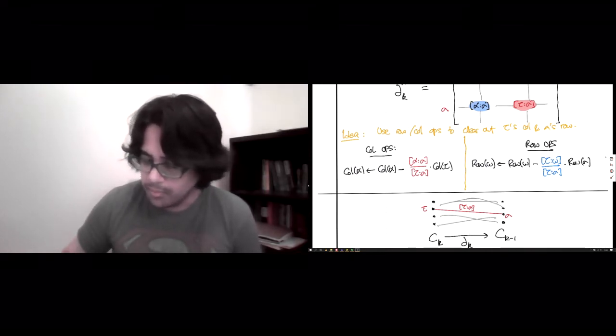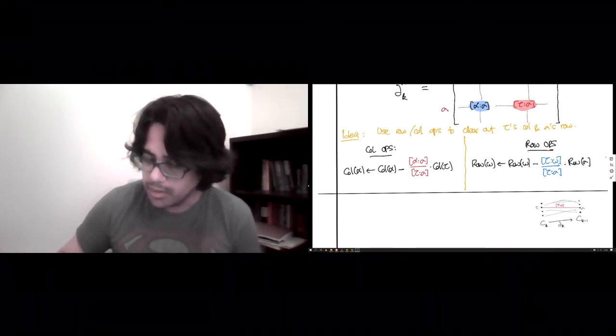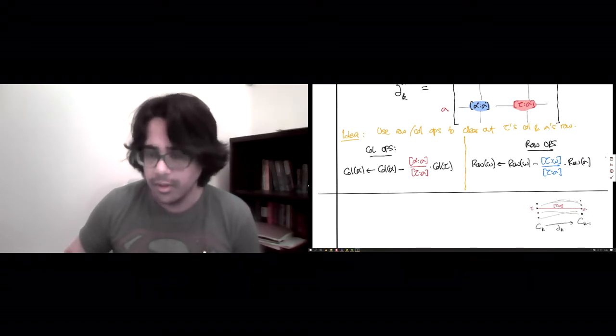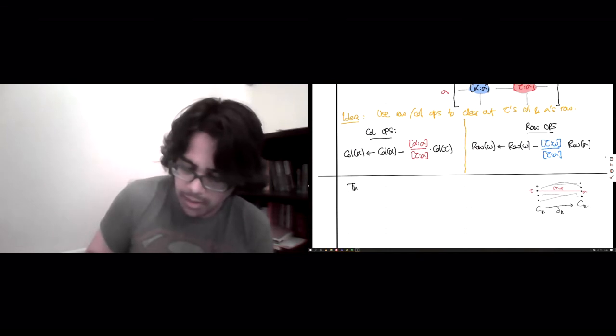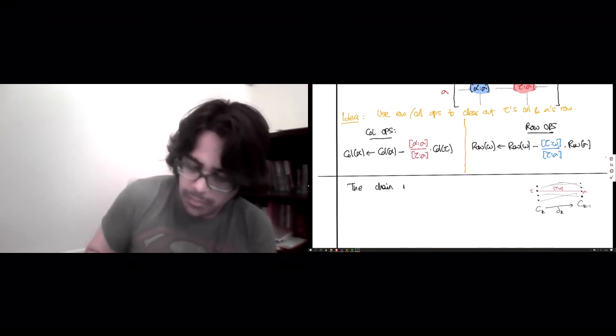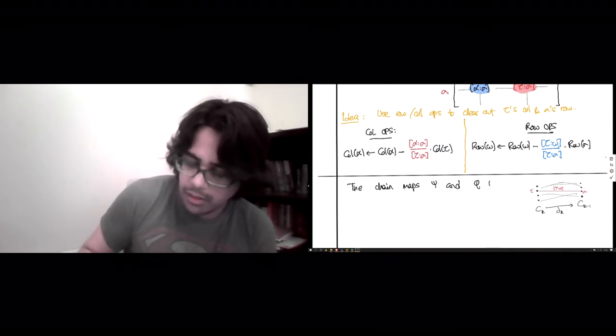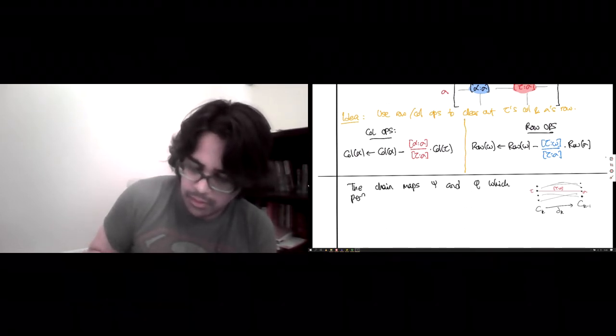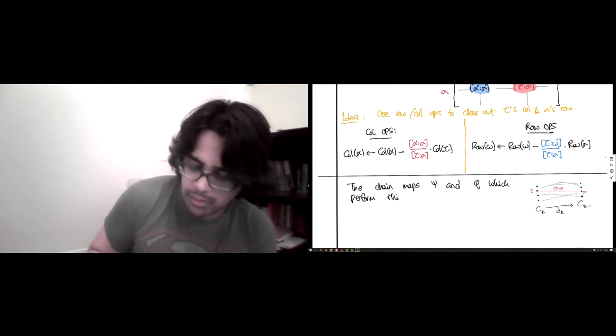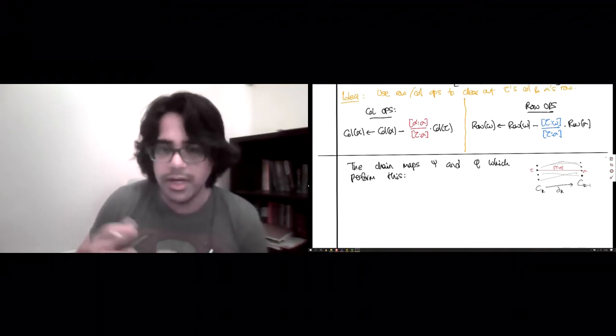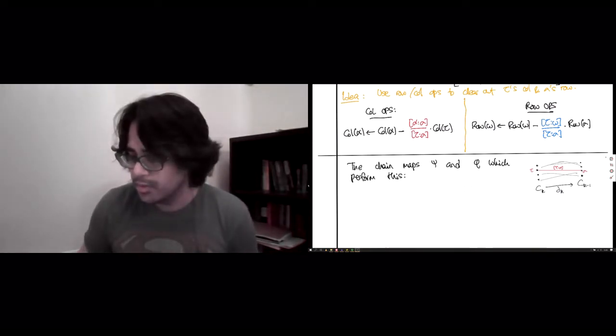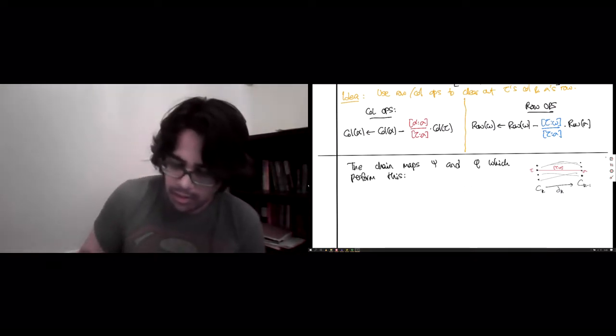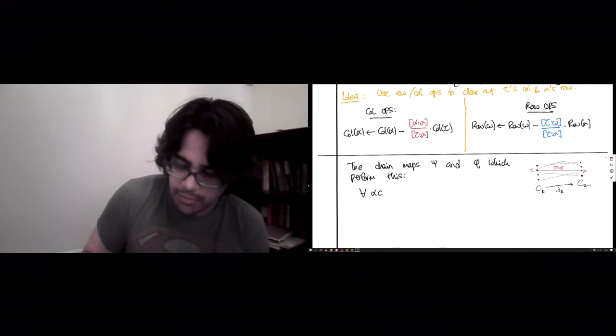So, if that picture helps you good, otherwise, we can sort of explicitly write down the maps psi and phi, which implement this reduction and this reinflation, removing and adding sigma and tau. And so, here they are. So, for all alpha in K,